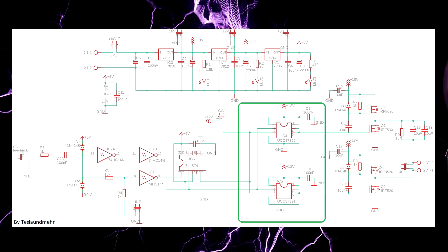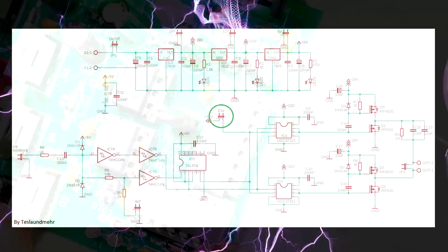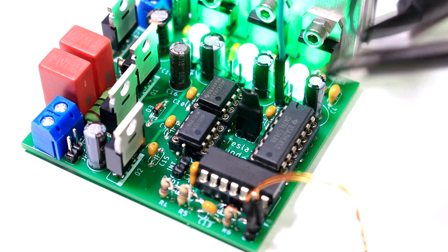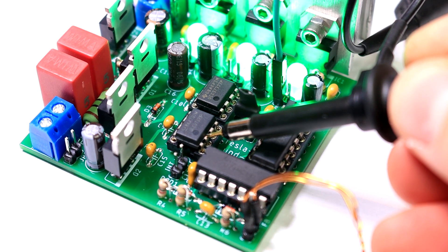Next we test the function of the driver ICs. For this we bridge the jumper name CV. CV means continuous wave. By bridging the jumper the enable pin of the driver ICs is connected to 12V. Now the output of the driver is permanently on. Perfect for our SSTC. The feedback signal now goes into a leg number 2 of the two ICs.